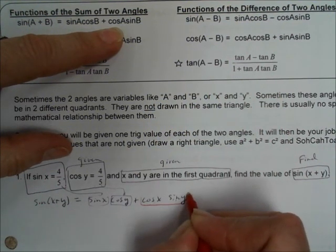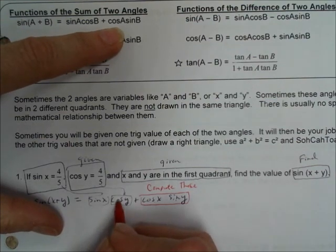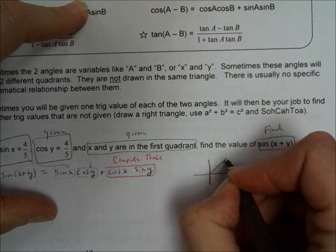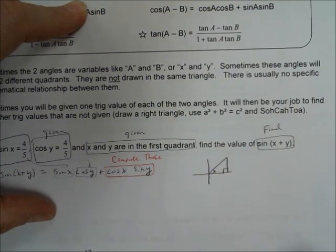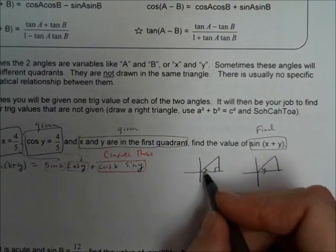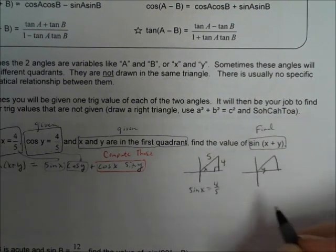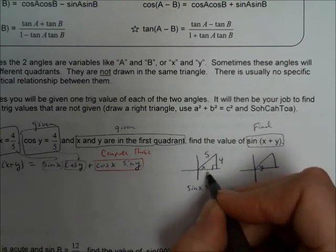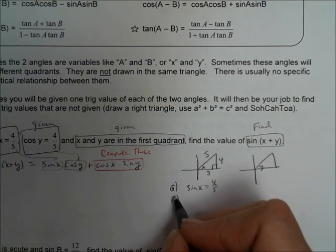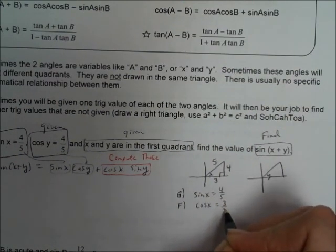We need to compute the missing pieces, so we draw two triangles. For triangle X in the first quadrant: since sine of X is four-fifths, sine is opposite over hypotenuse, and the missing side by Pythagorean theorem — it's just a 3-4-5 triangle. So the cosine of X, which is adjacent over hypotenuse, equals three-fifths. For triangle Y in the first quadrant: cosine of Y is four-fifths, meaning adjacent over hypotenuse equals four-fifths, so the missing side is three.